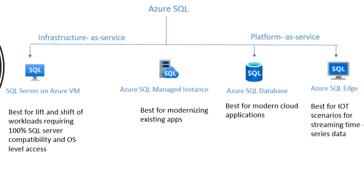The first service is SQL Server on Azure VM. This is a virtual machine running in Azure with an installation of SQL Server, making it an Infrastructure as a Service option. It virtualizes hardware and infrastructure for compute, storage, and networking in Azure, making it a great option for lift-and-shift migration of existing on-premises SQL Server installations to the cloud with complete flexibility and compatibility.